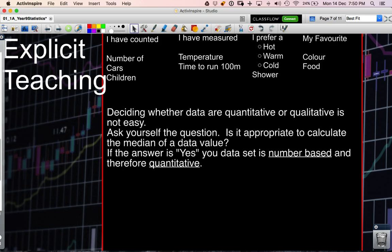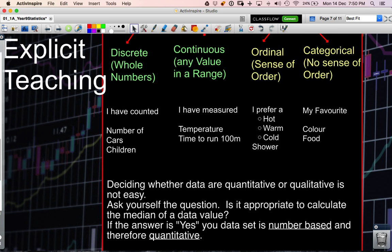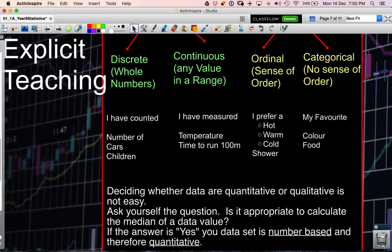If the answer is yes then your data is number based and you'll be going down either these two columns. So your data will be discrete or continuous. If the answer to this question is no.